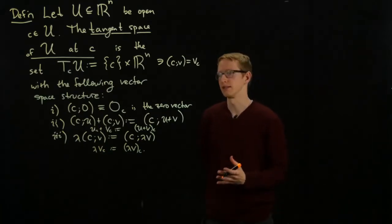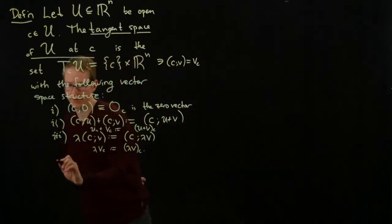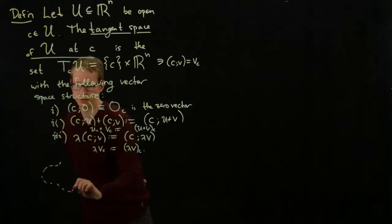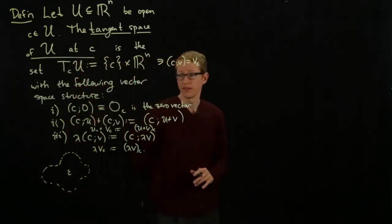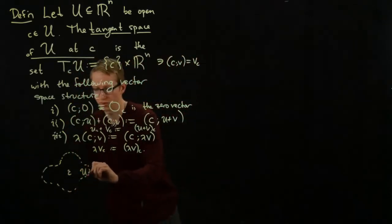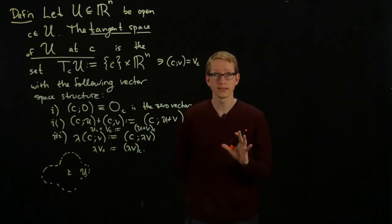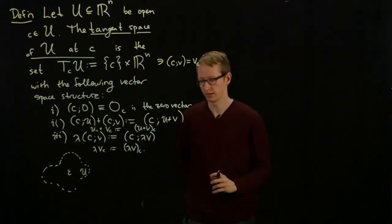How do we visualize it? Well, if we have an open set - let's say here we have an open subset of the plane, and the point c is somewhere here. Now, this domain U is just a subset of R2 in this case.